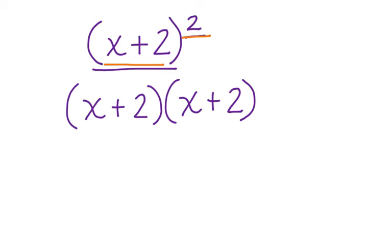First, let's multiply this out. We have x times x, which is x squared. We have x times 2, which is plus 2x.